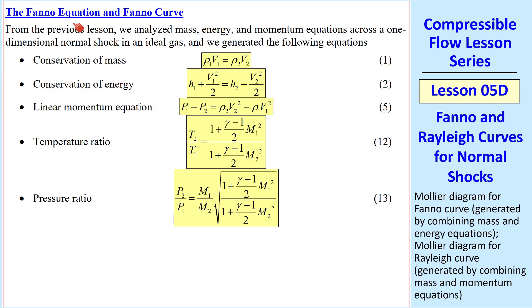First we'll talk about the Fanno equation, which we derived in the previous lesson. It's this equation for pressure ratio. We also derived the temperature ratio, but neither of these is useful unless we know M2. So this is what we'll look at in this lesson.